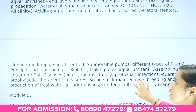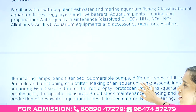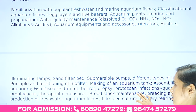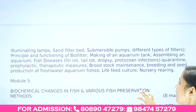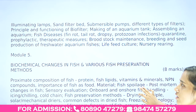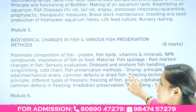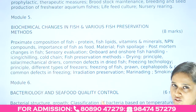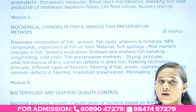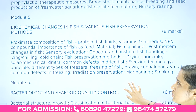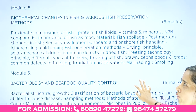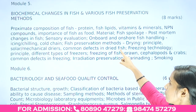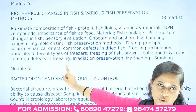Module 4 covers all aspects related to aquarium fish, breeding, and aquarium equipment — how to make an aquarium, rearing, and breeding. Module 5 is post-harvest technology — fisheries post-harvest aspects, agriculture aspects, and fish post-harvesting. Key topics include biochemical changes in fish and various fish preservation methods.